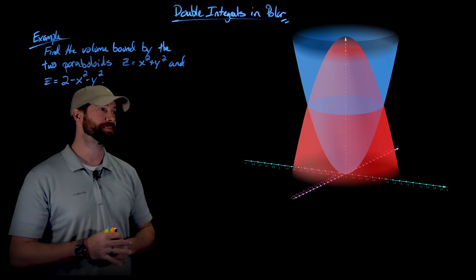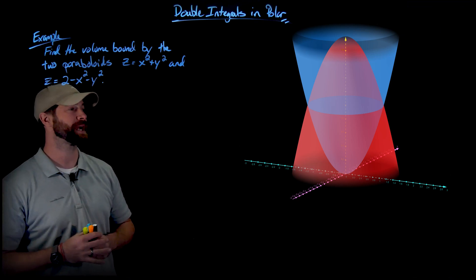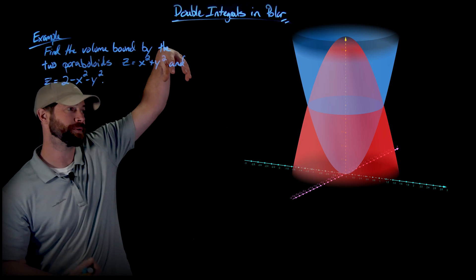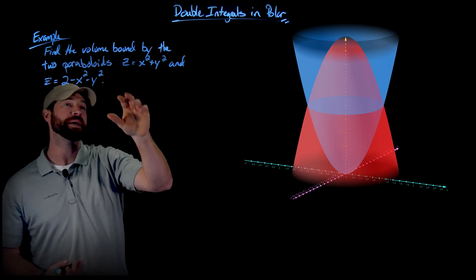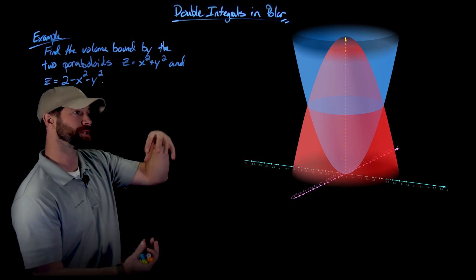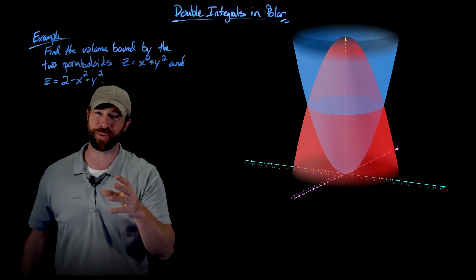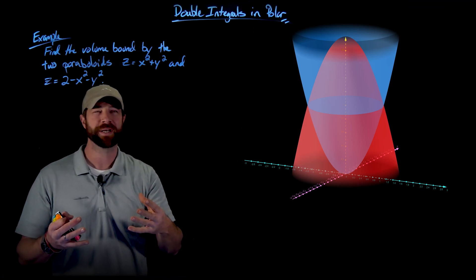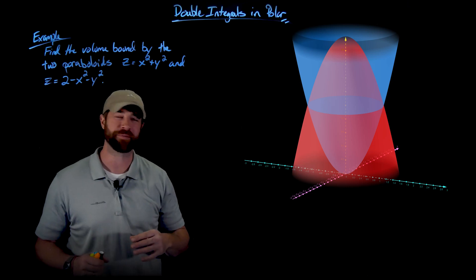What you'll notice is that z equals 2 minus x squared minus y squared is the paraboloid on top, and then we have z equals x squared plus y squared is the paraboloid on the bottom, so we don't get a negative value for the volume.